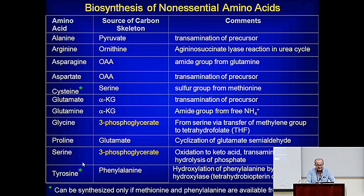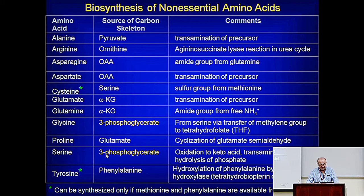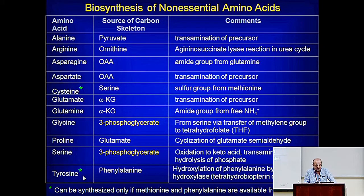Serine can be synthesized from a glycolytic intermediate — this is the important link between carbohydrates and amino acids. It's made from 3-phosphoglycerate, which is part of glycolysis. 3-phosphoglycerate is converted to 3-phosphoserine and then to serine. Because serine and glycine are interconvertible, glycine can also be made from the same intermediate.